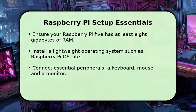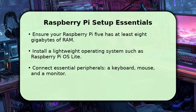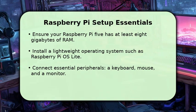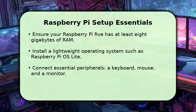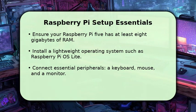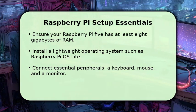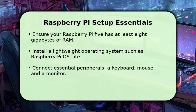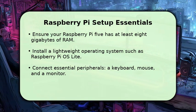To begin, ensure your Raspberry Pi 5 has at least 8GB of RAM for optimal performance. Install a lightweight operating system like Raspberry Pi OS Lite to maximize available resources.